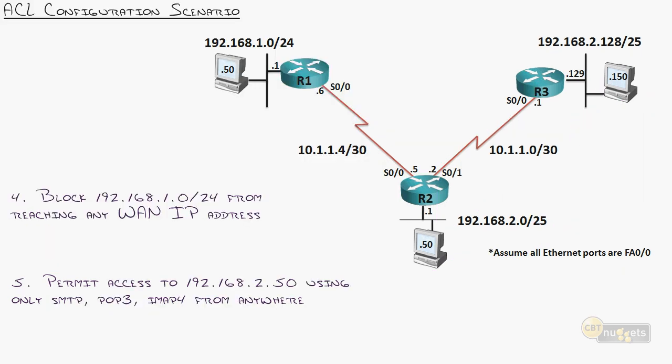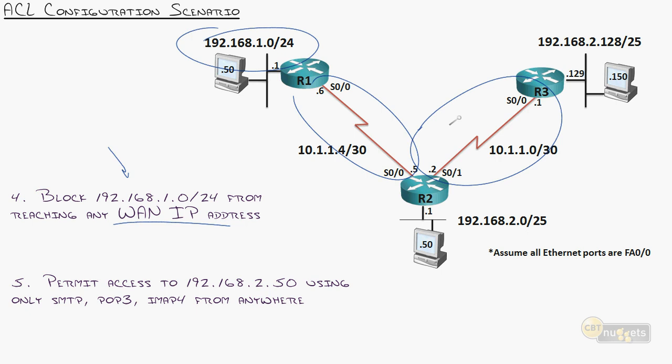Are you feeling it yet? Are you looking at these access lists — it's starting to feel a little warm and cozy. Let's do two more to solidify this. Number four: block 192.168.1.0/24 from accessing any WAN IP address — that's both WAN links.